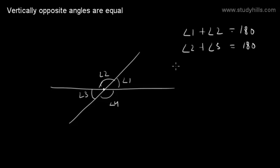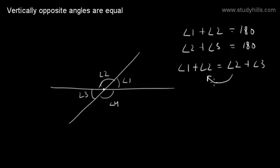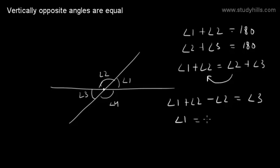So we can say the sum of Angle 1 plus Angle 2 is equal to the sum of Angle 2 plus Angle 3. Here we can move Angle 2 to the right-hand side. Then this equation becomes Angle 1 plus Angle 2 minus Angle 2 is equal to Angle 3. So it simplifies to Angle 1 is equal to Angle 3. We have proved that Angle 1 is equal to Angle 3.